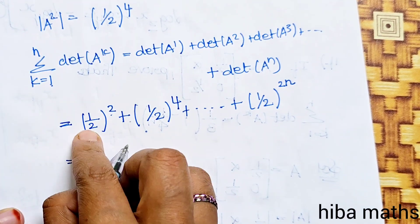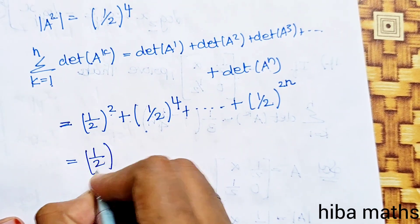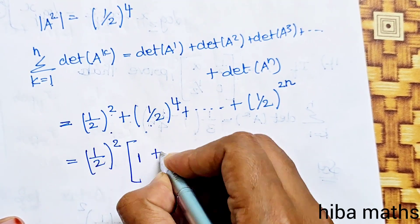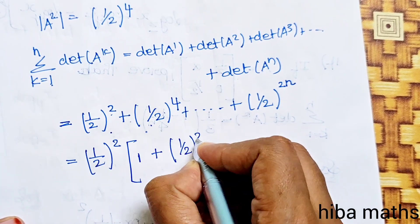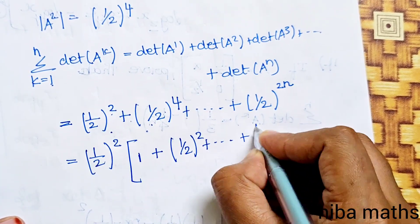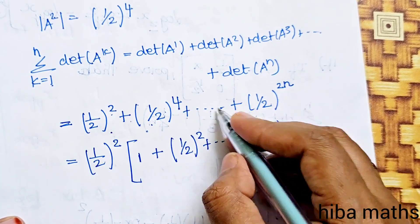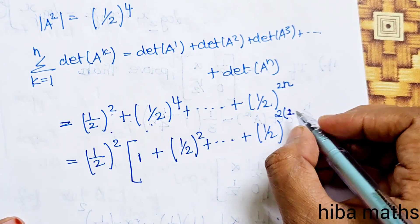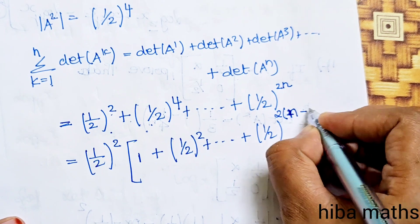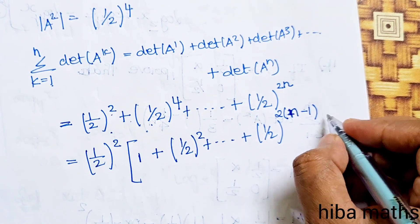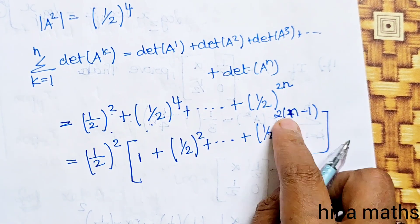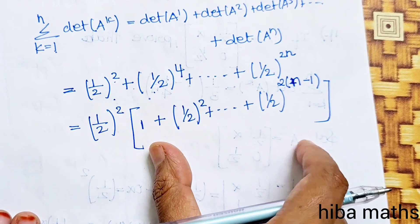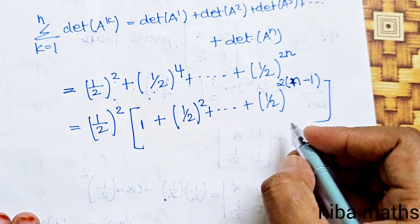So the series is: (1/2)² + (1/2)⁴ + (1/2)⁶ + ... + (1/2)^(2n). This is a geometric progression (GP) series with first term a = 1/4 and common ratio r = 1/4. The last term is (1/2)^(2n) = (1/4)^n.